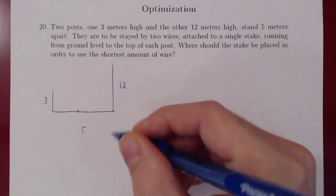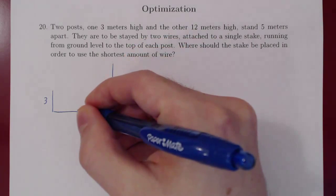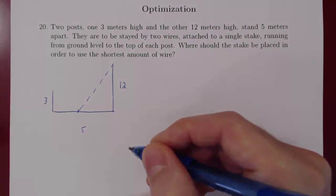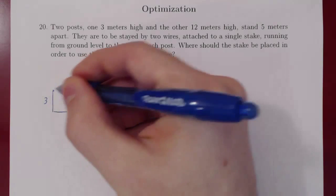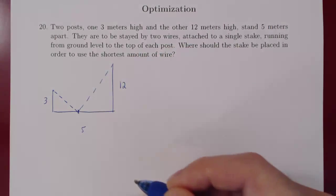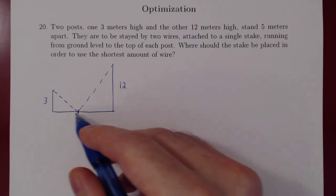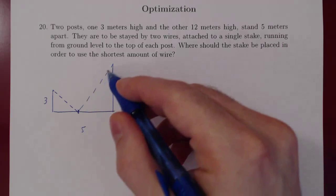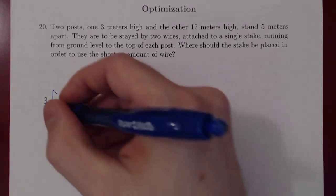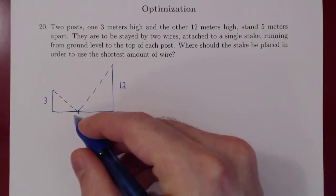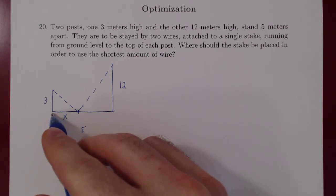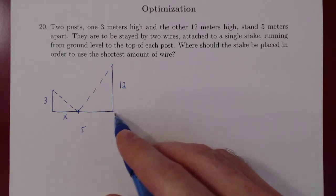Suppose the stake is here. You're going to tie up a wire from the top of this pole down to our stake. Then we'll tie up a wire from the top of the other pole down to that very same stake. Where do we position our stake so that the amount of wire used is minimized? Call this segment x — we don't know where to position our stake, so it's an unknown. And since the total length is 5, the other segment is 5 minus x.